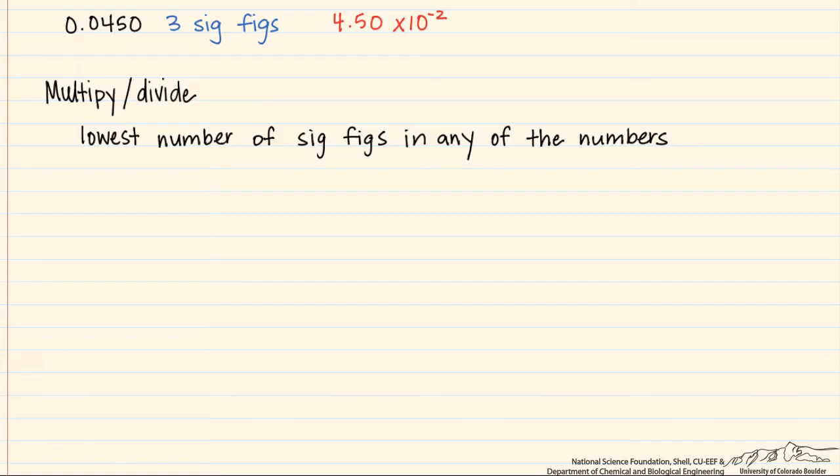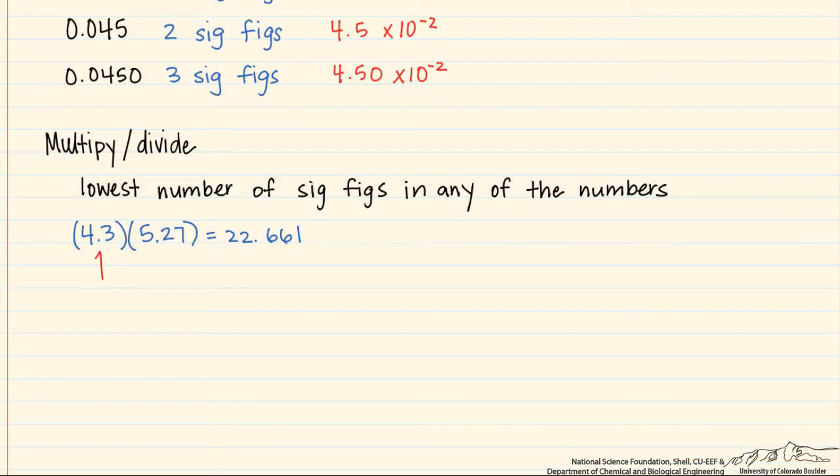So for example, if we multiply 4.3 times 5.27, in our calculator we get 22.661. But that's not what we report, because this has two significant figures, this has three significant figures. The lowest number of significant figures is 2, so this ends up being 23.